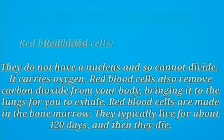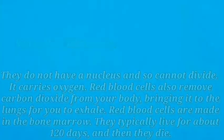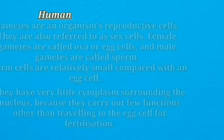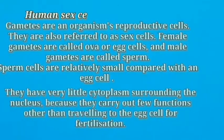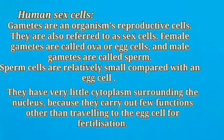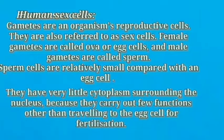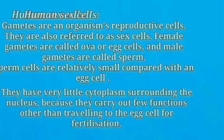Human sex cells: In the human reproductive system, there are two kinds of sex cells or gametes—the male gamete called sperm and the female gamete called ova or egg cell. The sperm cells travel to the egg cell for fertilization.